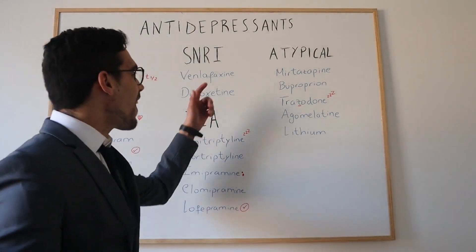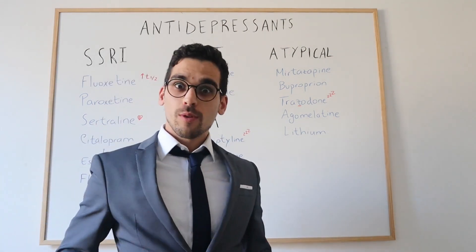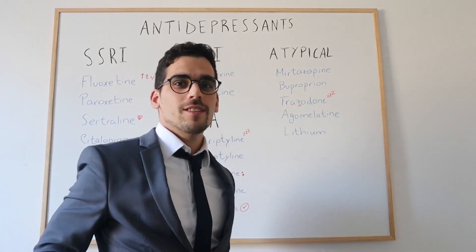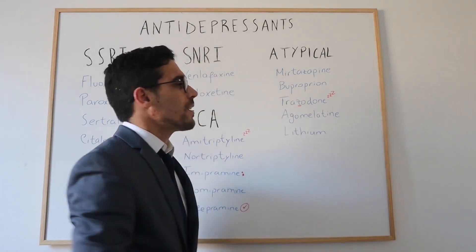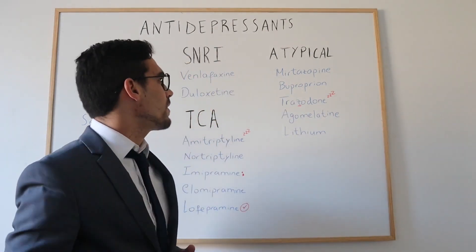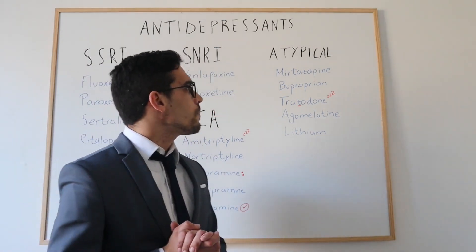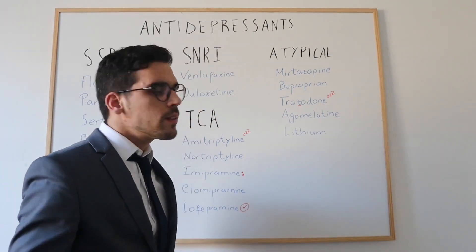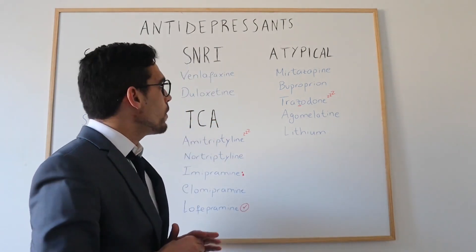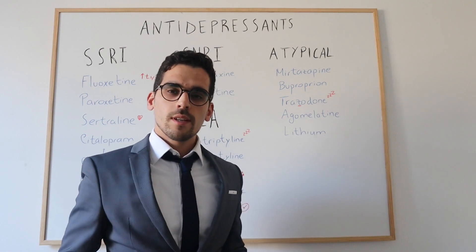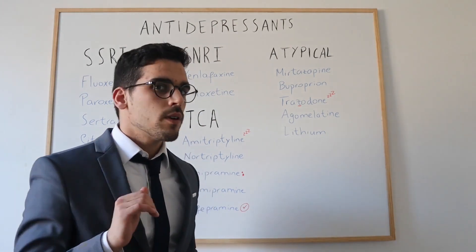Finally, the last class: the atypical antidepressants. All of them are quite different from each other. Let's start with mirtazapine, a tetracyclic antidepressant that basically enhances sympathetic output. Mirtazapine is known to increase appetite, making it a good choice for patients with anorexia. It also decreases the likelihood of nausea and can provide sedation, interestingly especially at lower doses.